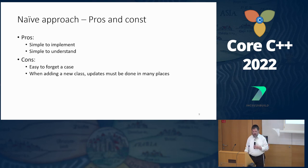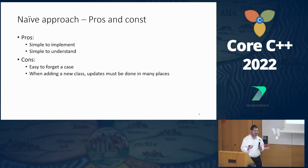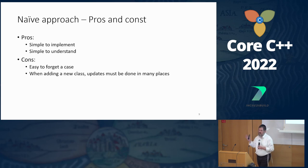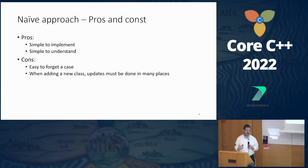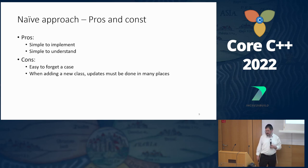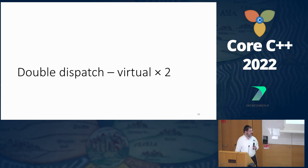It's very easy to forget a case, and then we get a runtime exception — which is better than nothing, but we would like some compile-time guarantees. And when we add a new class to the mix — because we had only three classes, but now we add more objects to our game — we have to go and update many classes. It's not enough to add the new class and implement what it needs, because all the other classes must now know about this new type. This breaks the open-close principle, so we don't like it. Let's see what we can do better.